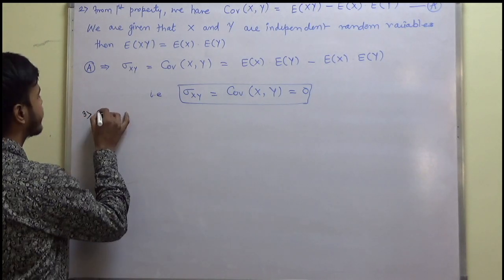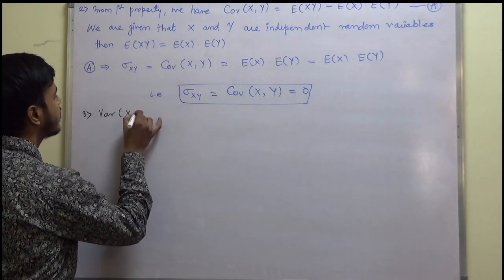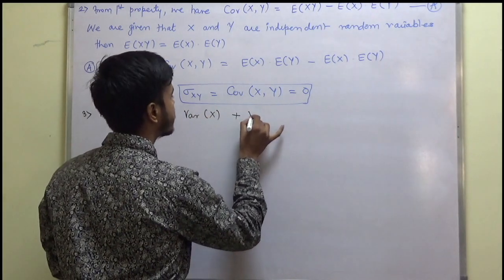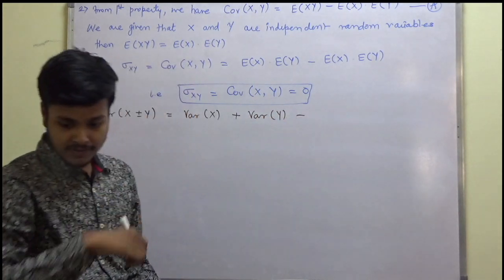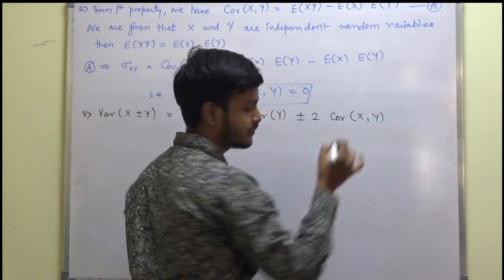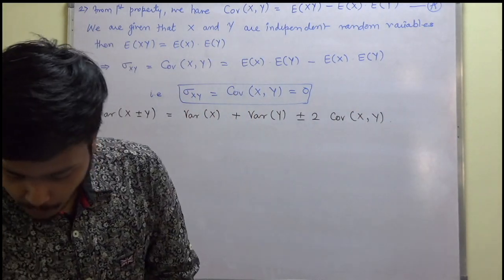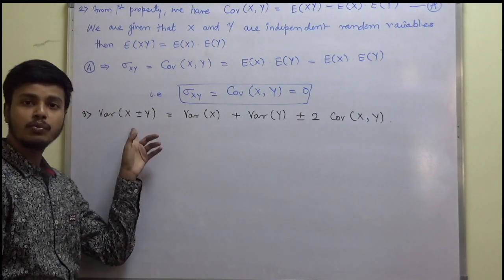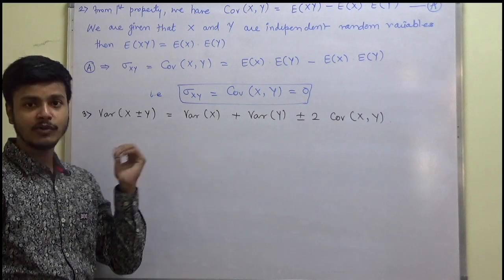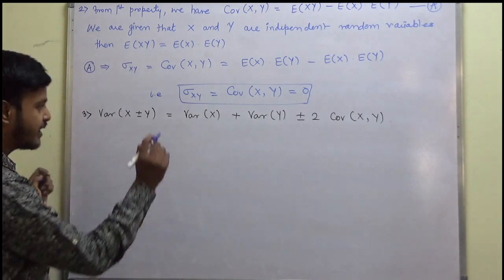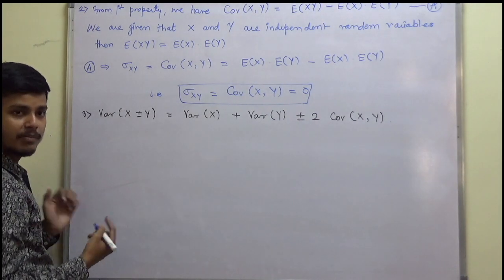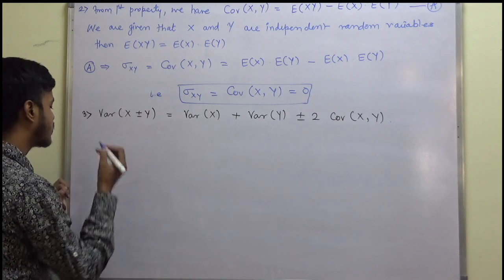Now let us take the third property. Variance of (x ± y) equals variance of x plus variance of y plus or minus two times covariance of xy. There are actually two sub-cases here. I will solve for variance of (x + y) and you have to solve it for (x minus y) — just for practice. I am going with the positive case.